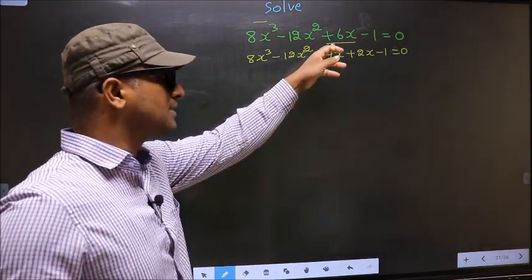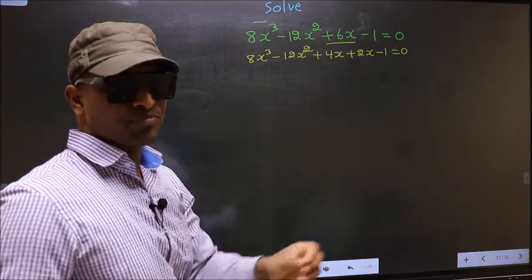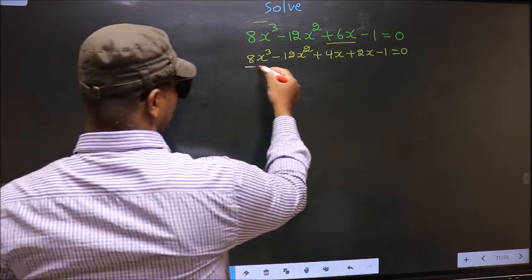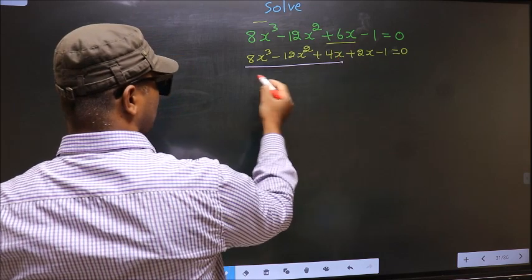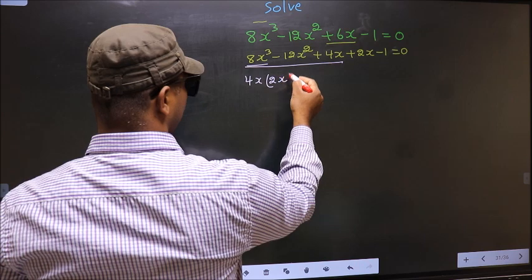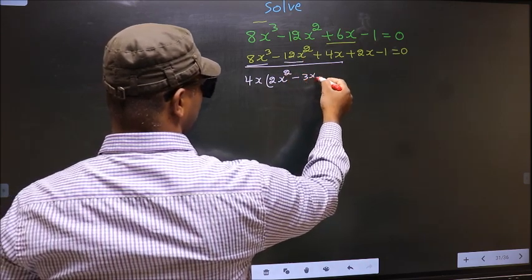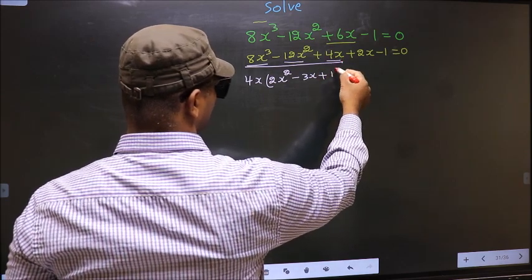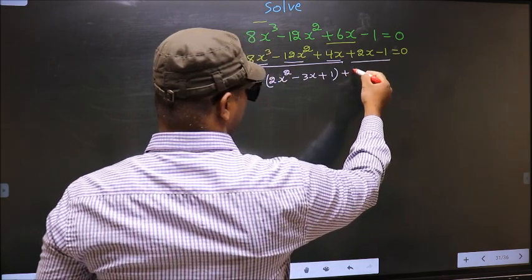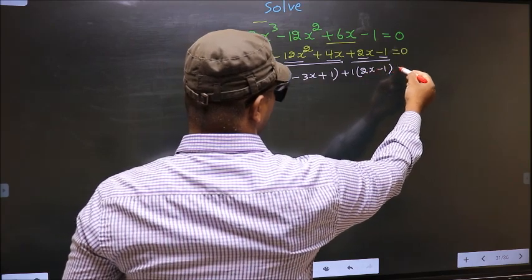In place of plus 6x I have written plus 4x plus 2x. Now from the first three terms, what can be taken out common is 4x. So you get 4x times (2x² minus 3x plus 1). Now from the remaining two terms you take out plus 1 common, you get the same thing — that is 2x minus 1 equal to 0.